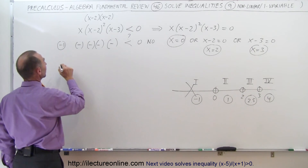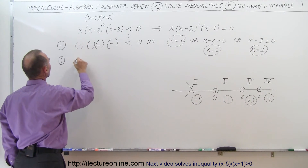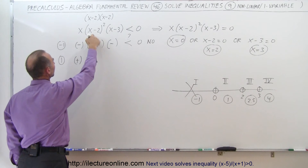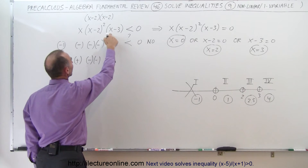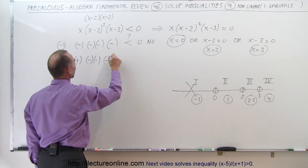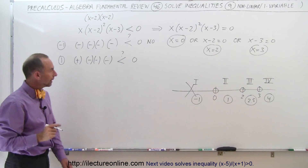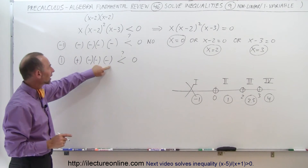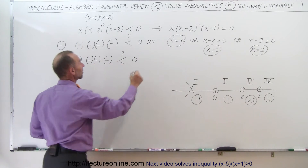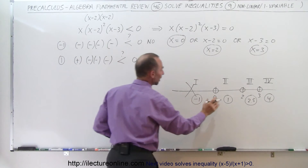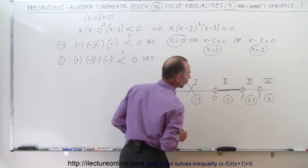Next, we test positive 1 for Region 2. Plugging 1 into X gives a positive number. Plugging into (X minus 2) gives a negative number, counted twice because it's squared. Plugging into (X minus 3) gives 1 minus 3, also a negative number. We're multiplying three negatives together, which gives a negative result — less than zero. So yes, it satisfies the inequality, meaning any point between 0 and 2 is part of the solution.